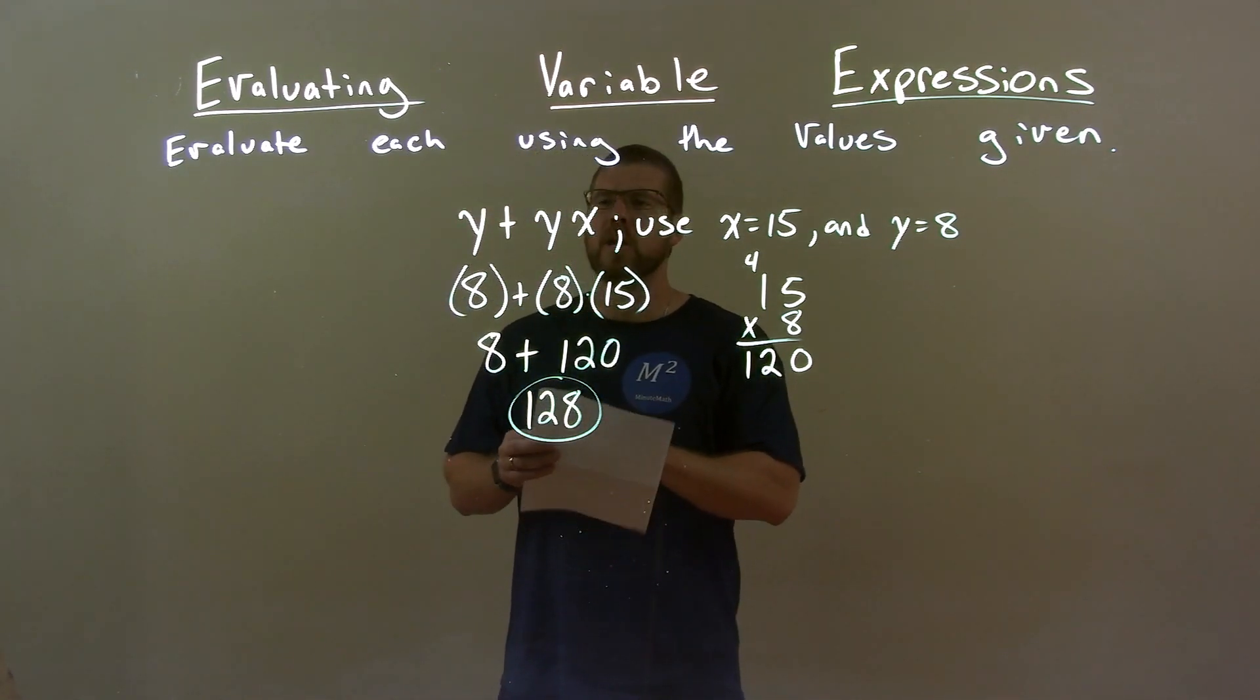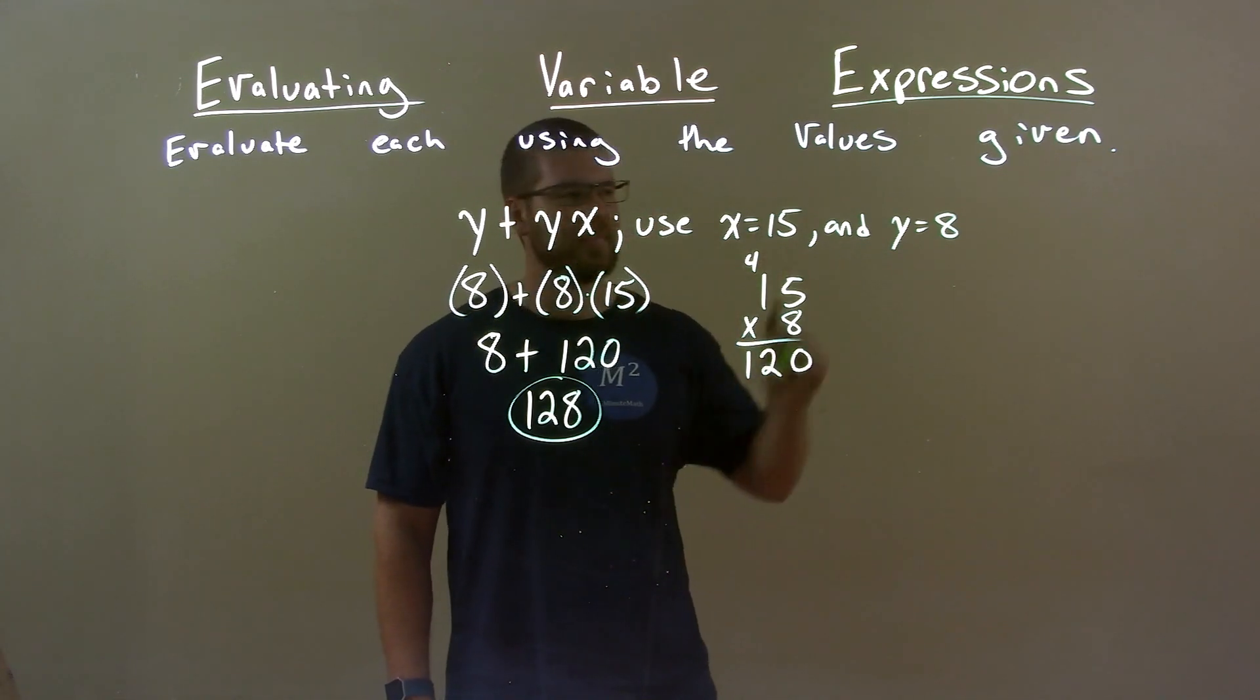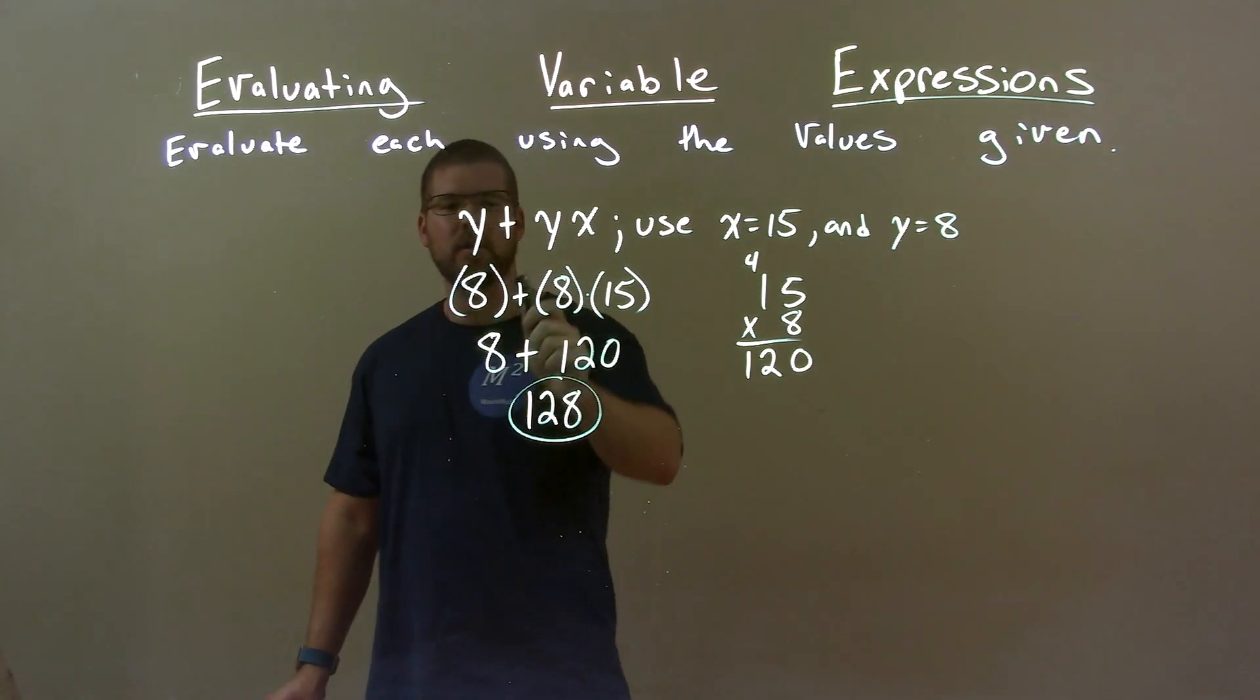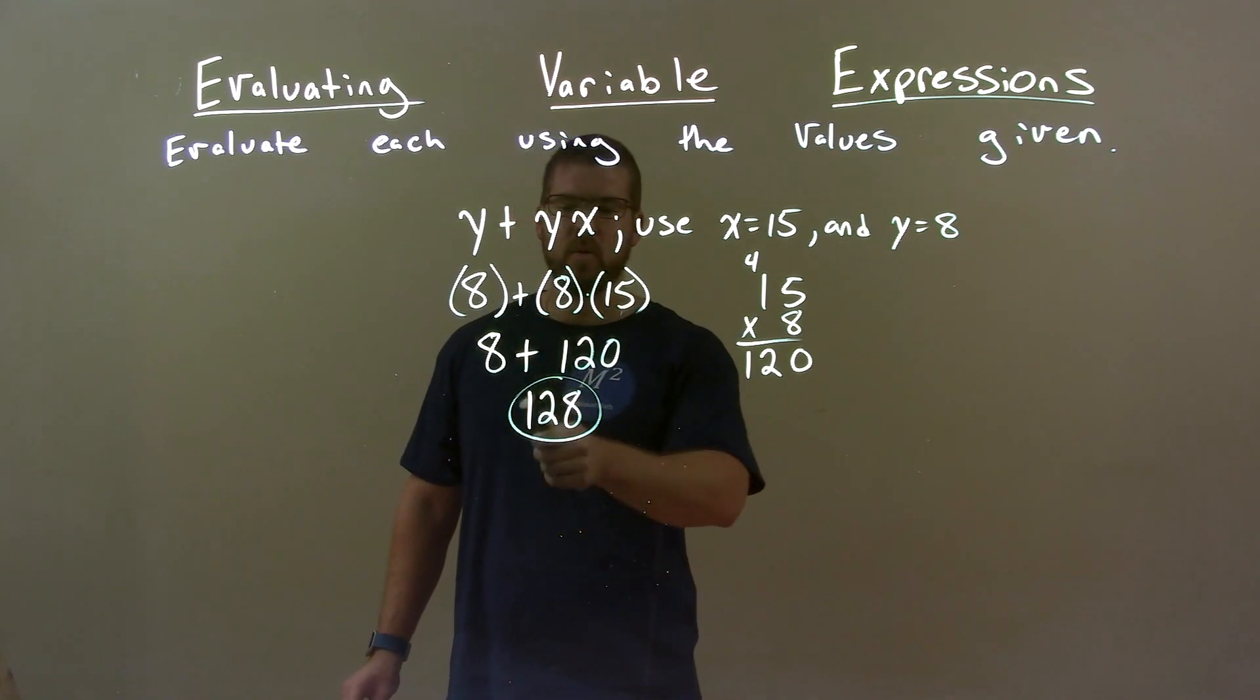Quick recap. We're given y plus y times x, and we're using x is 15 and y is 8. Substitute them in corresponding values. So we have 8 plus 8 times 15. 8 times 15, 120, added 8. Final answer 128.